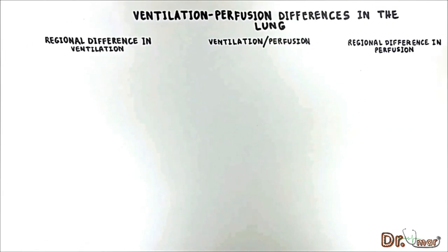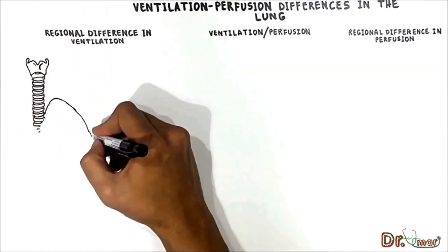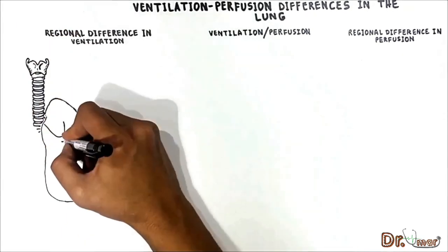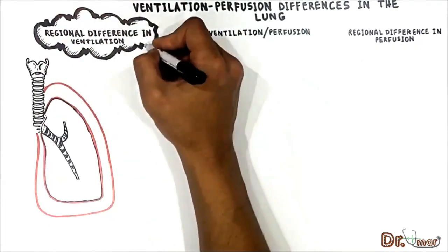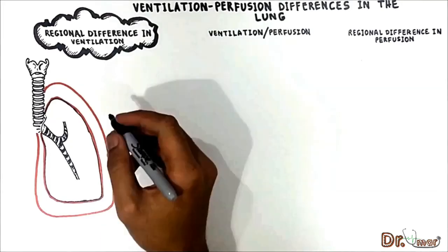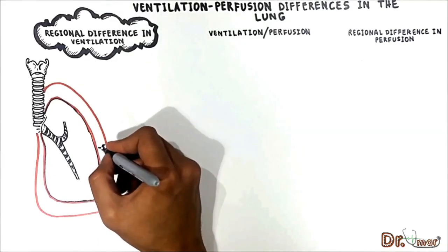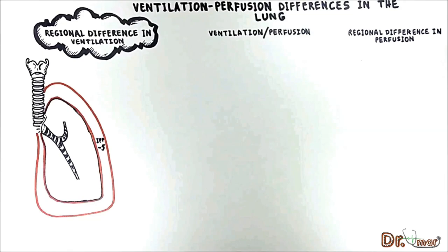First let's talk about regional differences in ventilation. In order to understand how ventilation changes in different lung regions, we have to know the regional difference in intrapleural pressure. It is very important to know that at FRC the mean value for intrapleural pressure is negative 5 cm water. However there are regional differences and the reason for these differences is gravity.